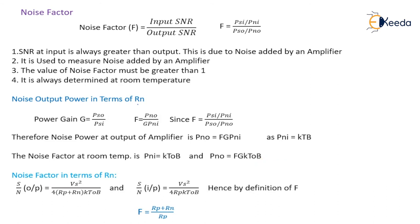Noise factor in terms of Rn: the signal to noise ratio at the output of an amplifier equals Vs squared over 4 times (Rp plus Rn) times KT0B. The signal to noise ratio at the input is Vs squared over 4 times Rp times KT0B. Hence by the definition of F, we get F equal to (Rp plus Rn) divided by Rp.